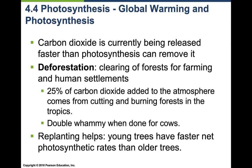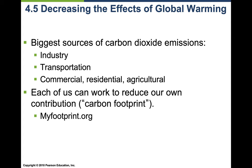Replanting helps — young trees have faster net photosynthesis than older trees, so planting small, fast-growing trees is beneficial. However, human replanting efforts are still less efficient than natural forest regeneration. The biggest sources of CO2 emissions are industry, transportation, commercial, residential, and agriculture. Each of us can reduce our footprint; there are carbon footprint calculators online worth checking out.